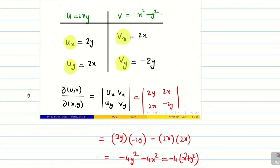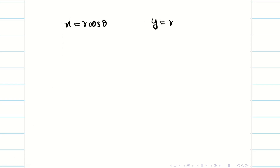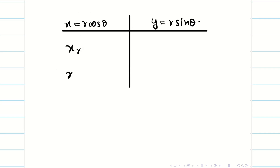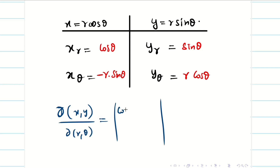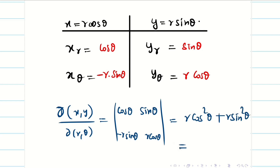Second table: from x = r cosθ and y = r sinθ, we get xr = cosθ, xθ = −r sinθ, yr = sinθ, yθ = r cosθ. So ∂(x,y)/∂(r,θ) = determinant [cosθ, −r sinθ; sinθ, r cosθ]. Expanding: r cos²θ + r sin²θ = r(cos²θ + sin²θ) = r.